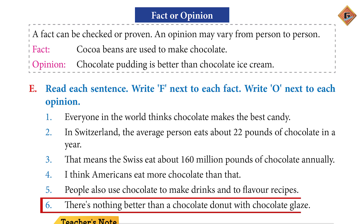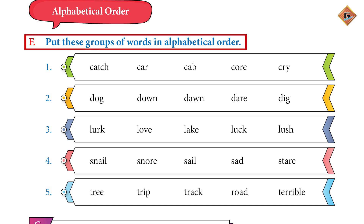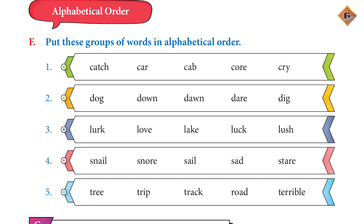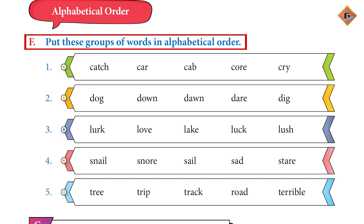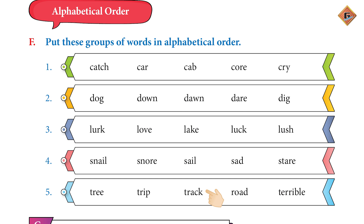Let's move to page 108. Now we talk about alphabetical order — the given words need to be written in alphabetical order, where the word whose first letter comes first alphabetically is written first. Question F: Put these groups of words in alphabetical order. The answers are: Group 1: Cab, Car, Catch, Core, Cry. Group 2: Dare, Dawn, Dig, Dog, Down. Group 3: Lake, Love, Luck, Lurk, Lush. Group 4: Sad, Sail, Snail, Snore, Stare. Group 5: Road, Terrible, Track, Tree, Trip.